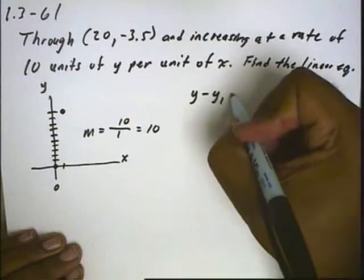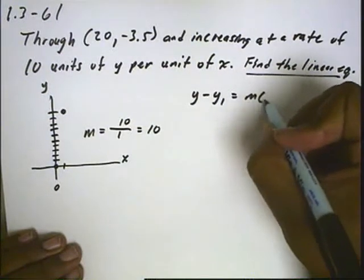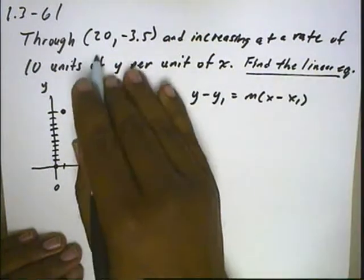For the point-slope formula, which creates the linear equation for us, we need slope, and we also need a point, and we have that.